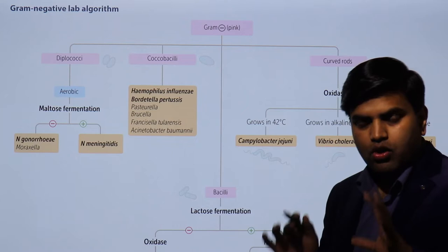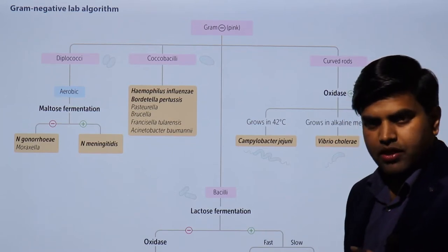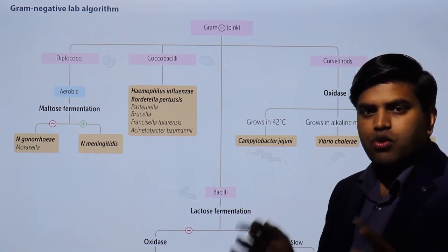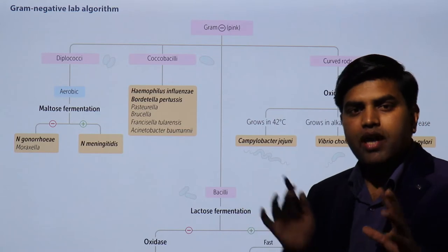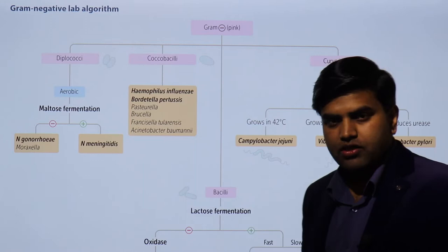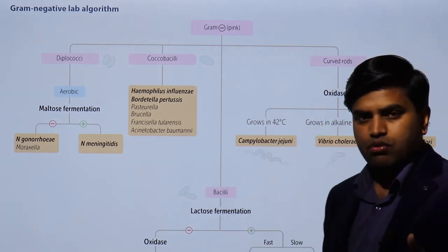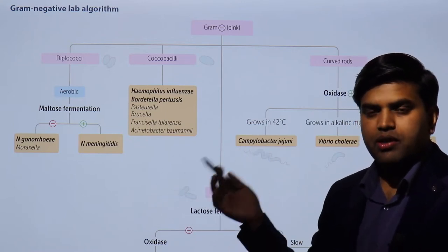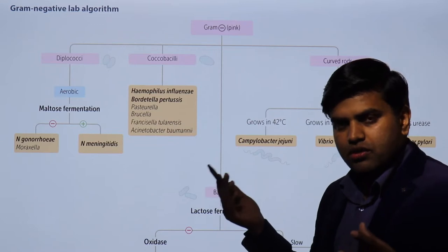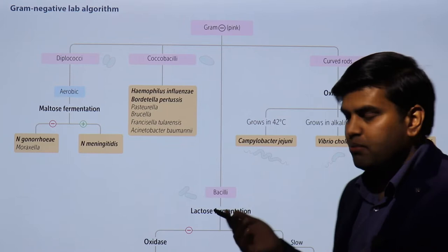Previously we talked about the gram stain procedure, and that gram-positive cocci — all cocci are gram-positive except a few like Neisseria gonorrhoeae, Neisseria meningitidis, and Moraxella. All bacilli are gram-negative except a few: Listeria, Corynebacterium diphtheriae, Mycobacterium, and Nocardia. These were the only few gram-positive bacteria that are bacilli.